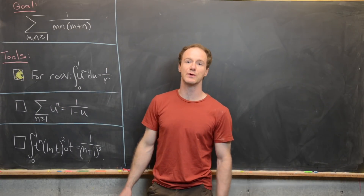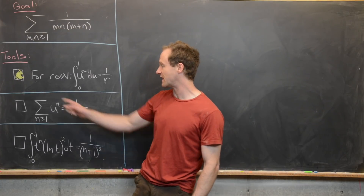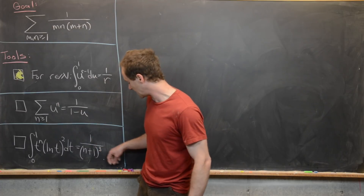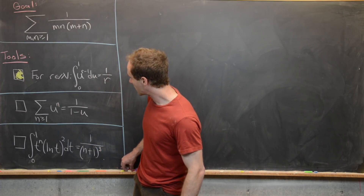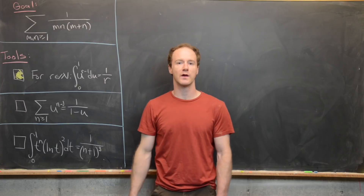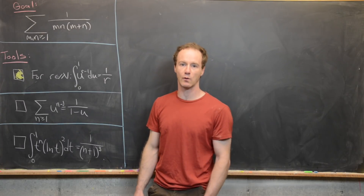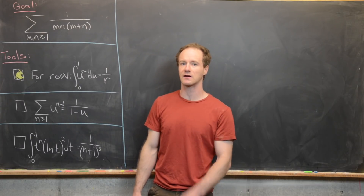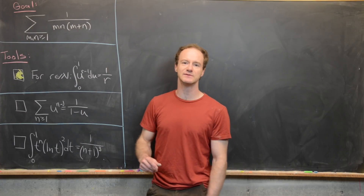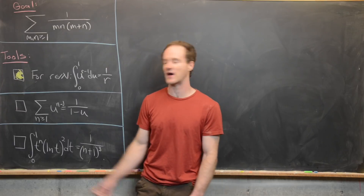Another tool which we will not prove is the formula for the sum of a geometric series. That says the sum as n goes from 1 to infinity of u to the n minus 1 is equal to 1 over 1 minus u, when u is strictly between negative 1 and 1. We're going to use this a few times, but we won't prove it as it's a standard fact.